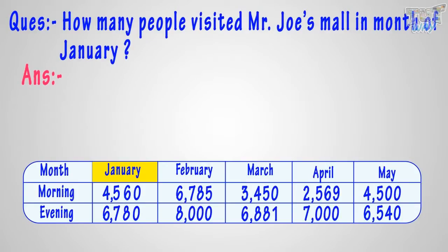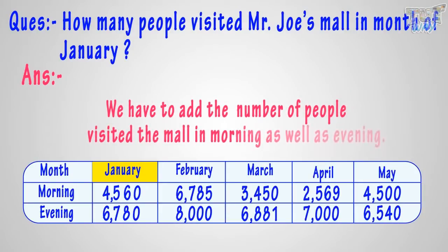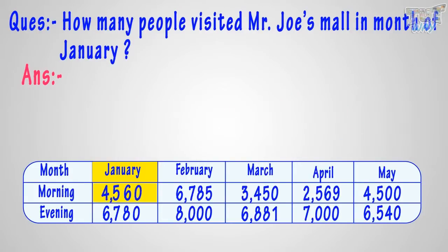We are asked to find out the total number of people, so we have to add the number of people who visited the mall in the morning as well as the evening. We see 4,560 people visited the mall in the morning, and 6,780 people visited the mall in the evening. So let's add both.